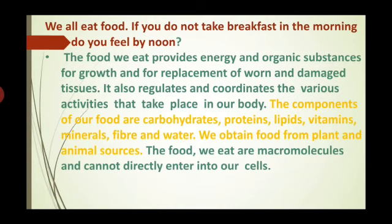The correct food sources in the right amount are carbohydrates, proteins and lipids. These components — carbohydrates, proteins, lipids, vitamins, minerals, fiber and water — are obtained from plant and animal sources, as we studied in lower classes. The food we eat as macromolecules cannot directly enter our body; many processes happen in between in our digestive tract.